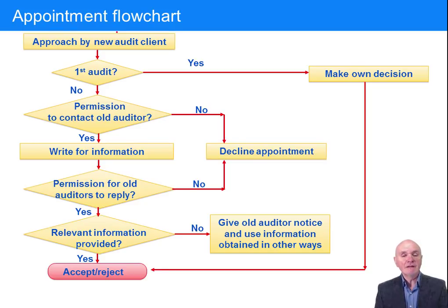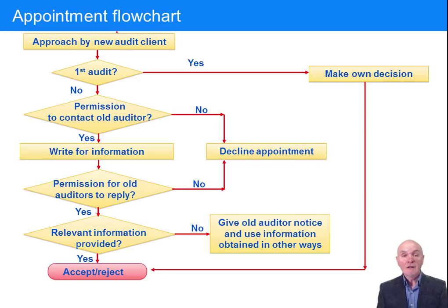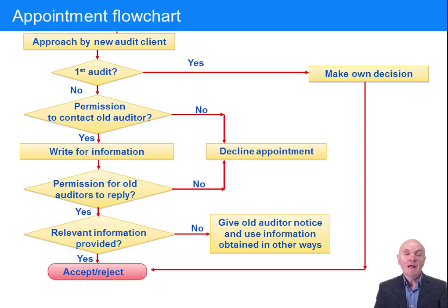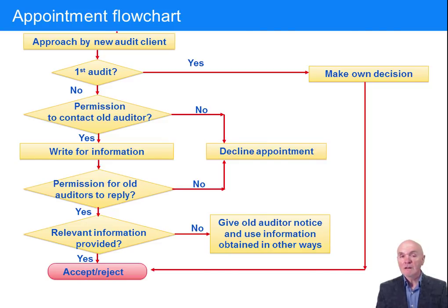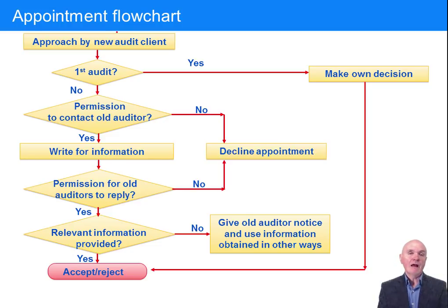What you hope for is that the relevant information will be provided — that the old auditor will write back and say there is no particular reason why they are resigning, no particular suspicions, no particular difficulty with the client. That's pretty much a green light for you to go. If they don't write back, or perhaps write back using slightly cagey words, then you might get a little bit worried and have to work harder to find that missing information in other ways.